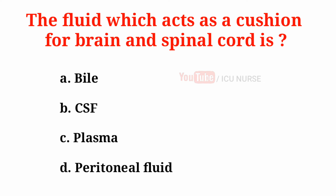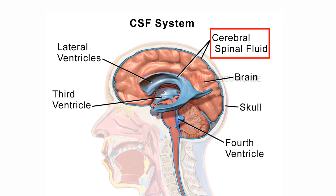The fluid which acts as a cushion for the brain and spinal cord is: A. Bile, B. CSF, C. Plasma, D. Peritoneal fluid. The correct answer is B. CSF — cerebrospinal fluid. The cerebrospinal fluid acts as a shock absorber cushion for the brain and spinal cord. It is a clear, colorless fluid found in the areas of the brain and spinal cord, acting as a mechanical barrier against shock and a lubricant for surrounding bones.